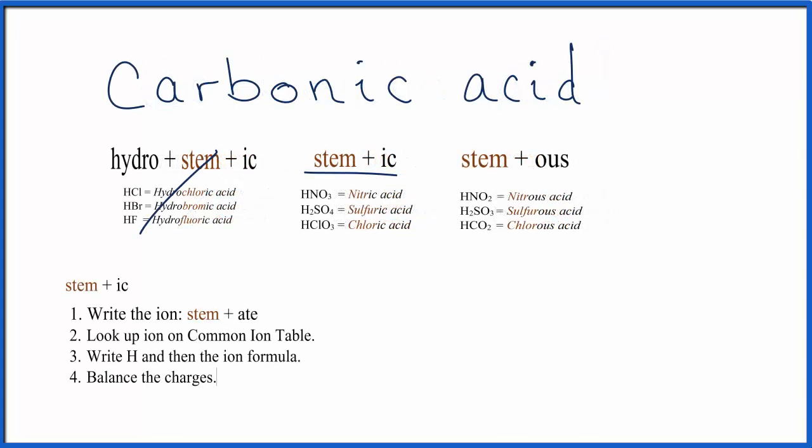The first thing we need to do is write the polyatomic ion that's attached to the hydrogen in this acid. So we'll write the stem, that's the C-A-R-B-O-N. And then instead of IC, we're going to change that to A-T-E.